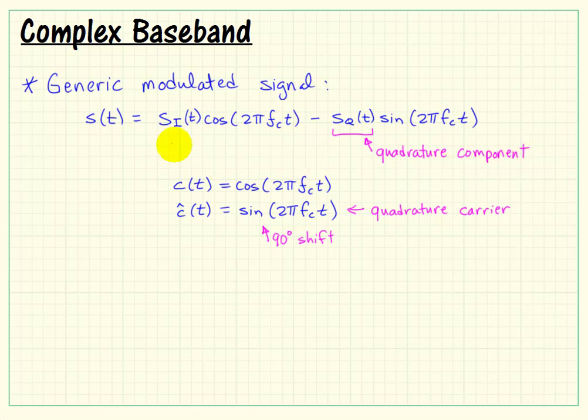But this quadrature component then, or the Q component of our signal S, is associated with a sine. And then we call the other one the in-phase component. So that gives us our I and Q components.